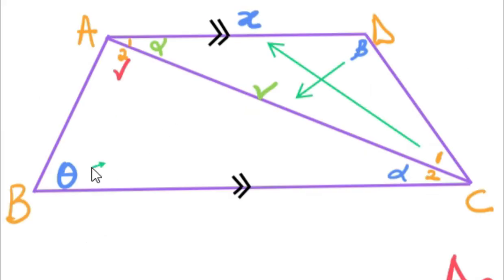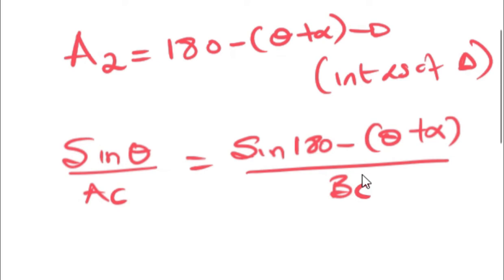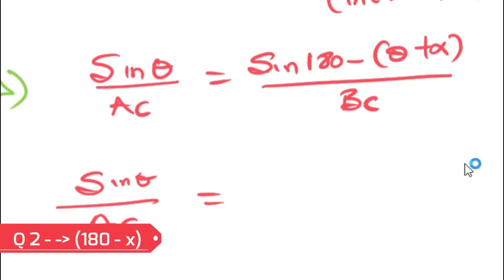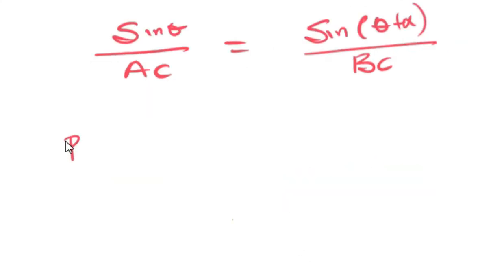We can do sine rule again because we have one side-angle pair and we have an unknown in the second side-angle pair. So with that, we can find this. Then we'll reduce sine 180 minus theta plus alpha. Since it's in the second quadrant, we bring it back to the first. Then we cross multiply.